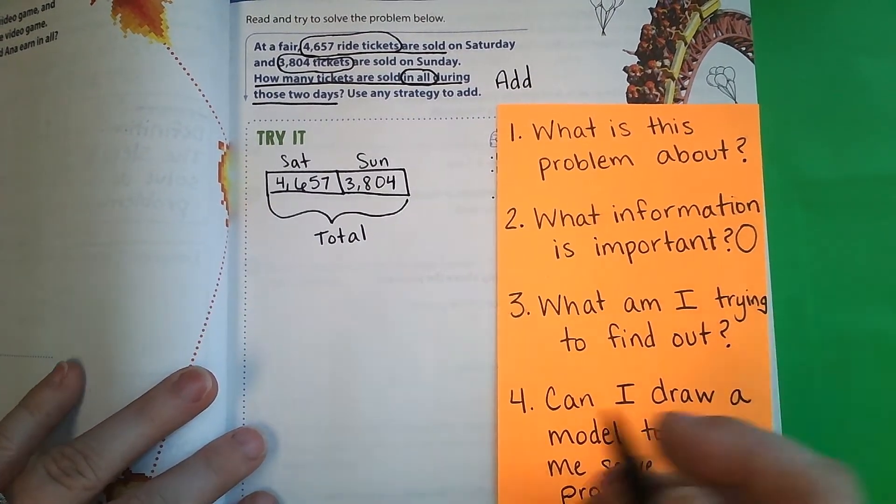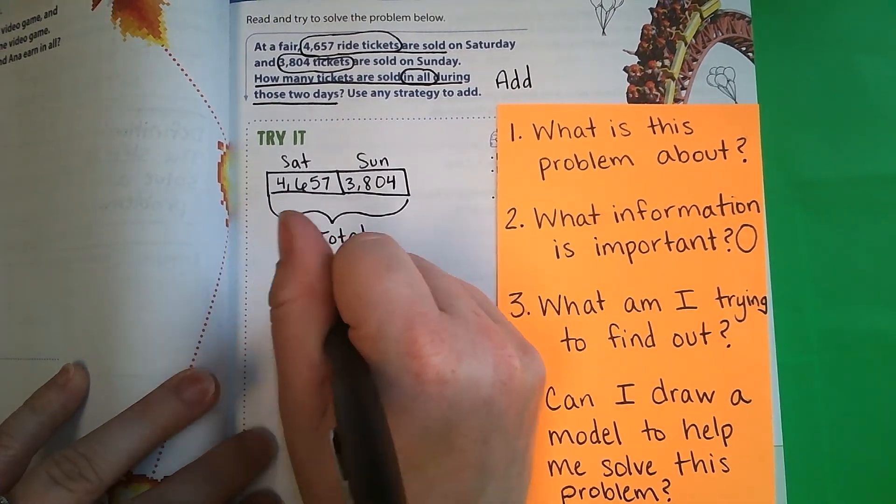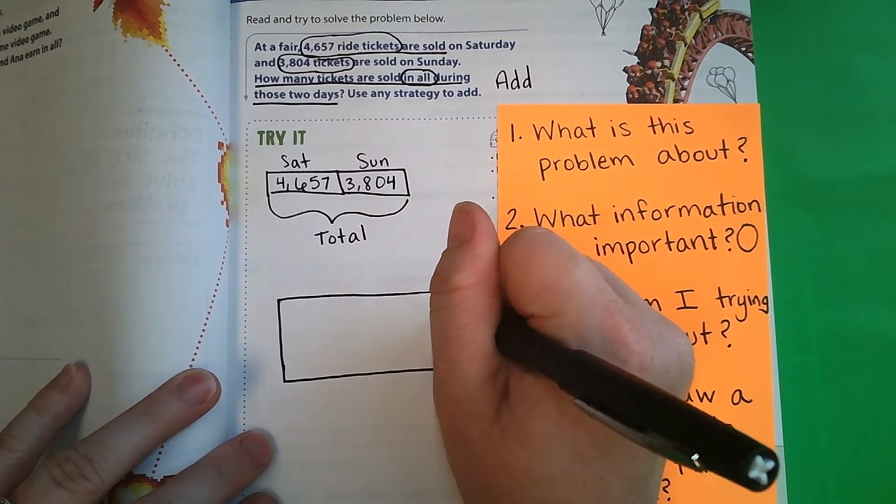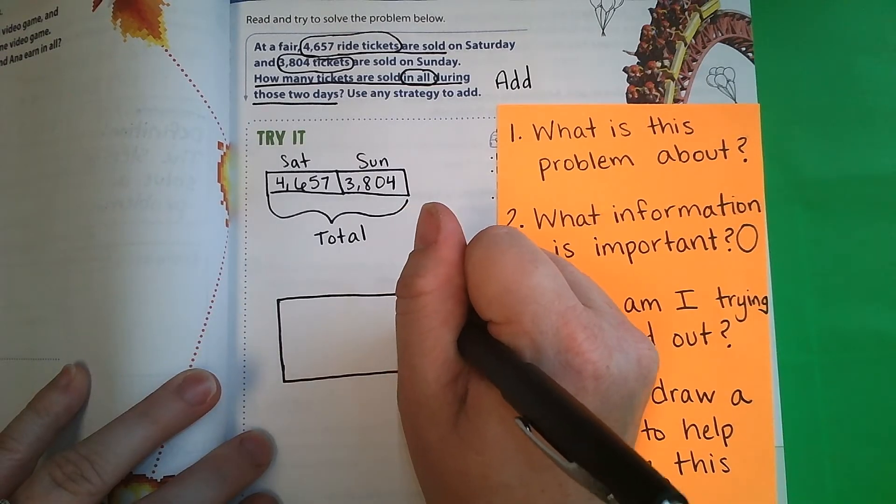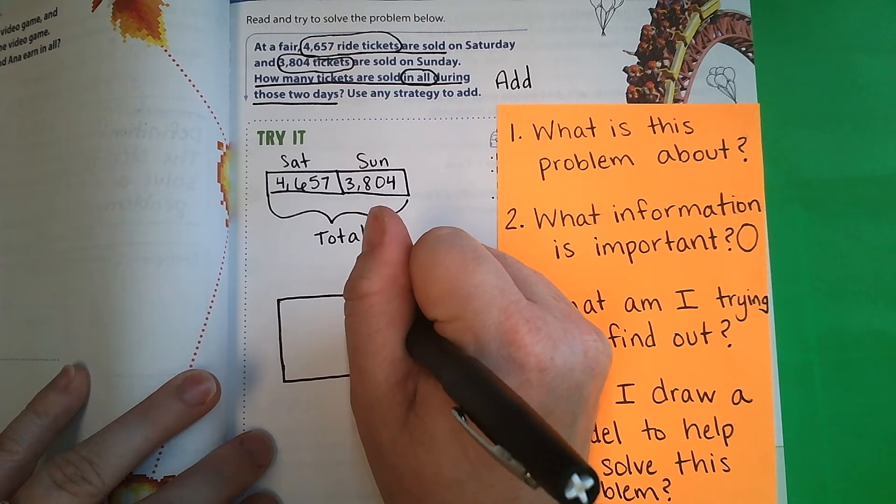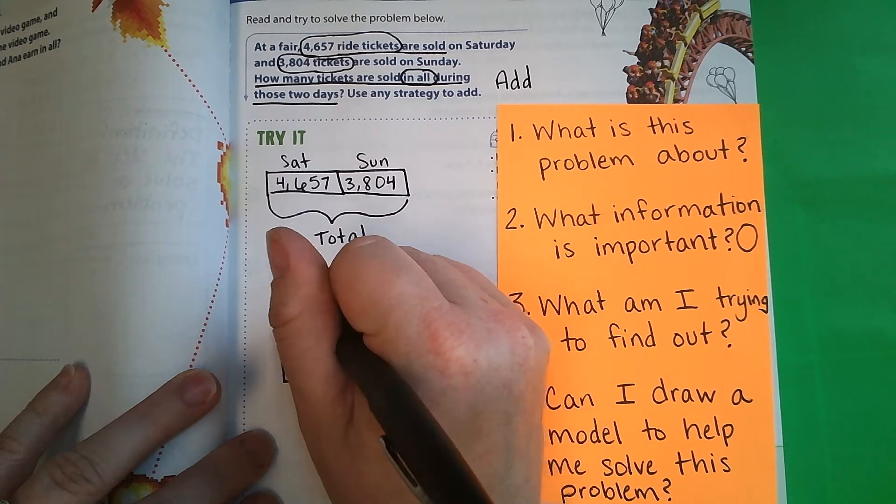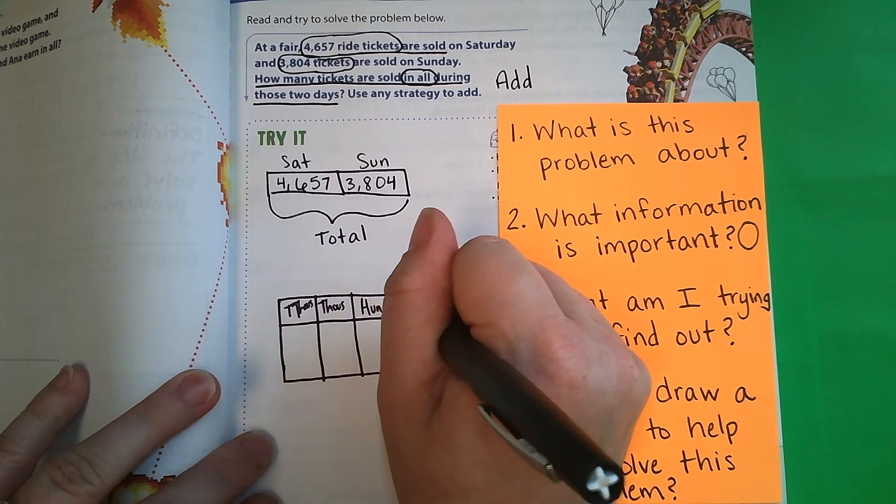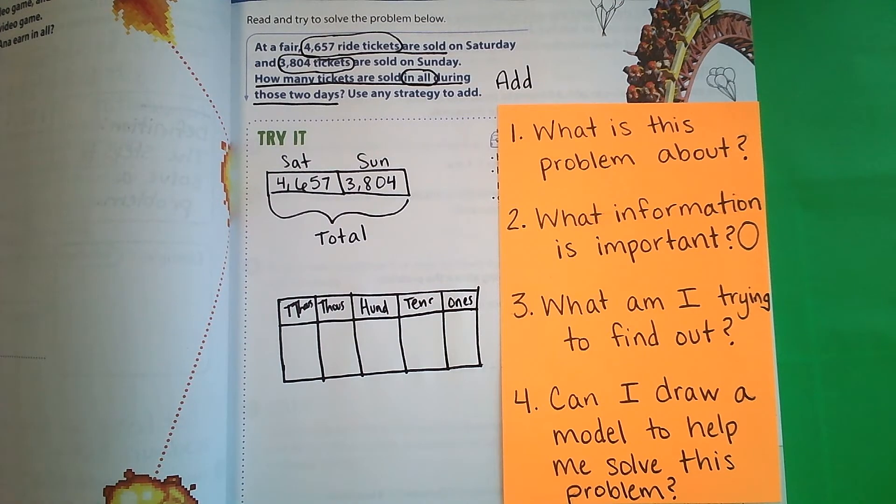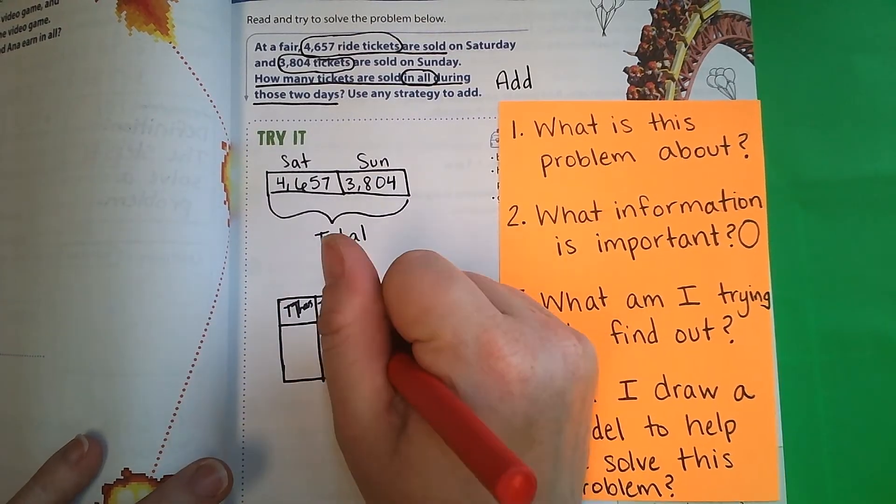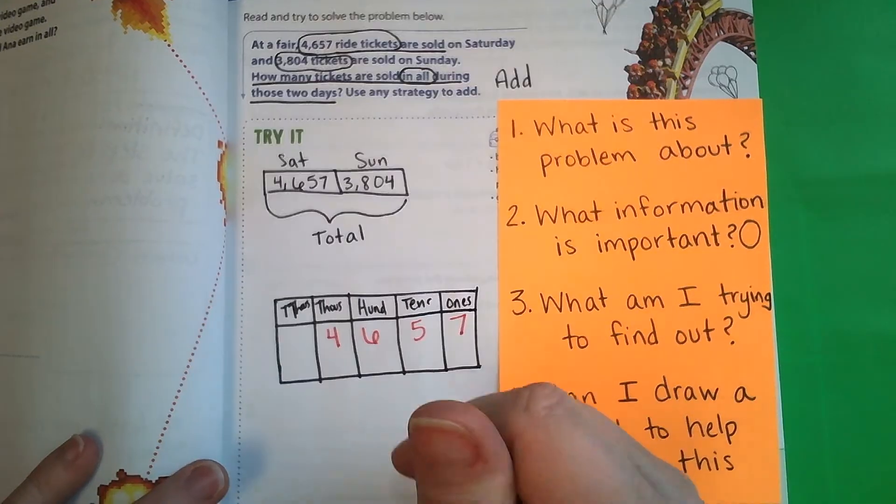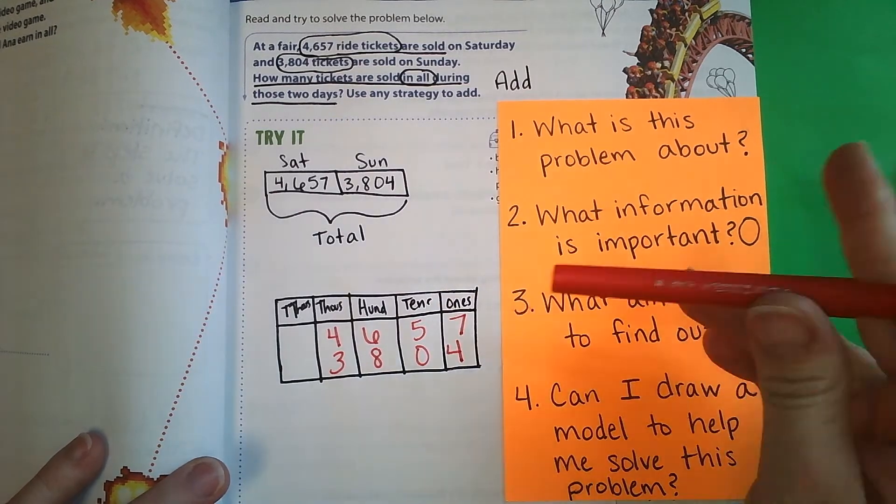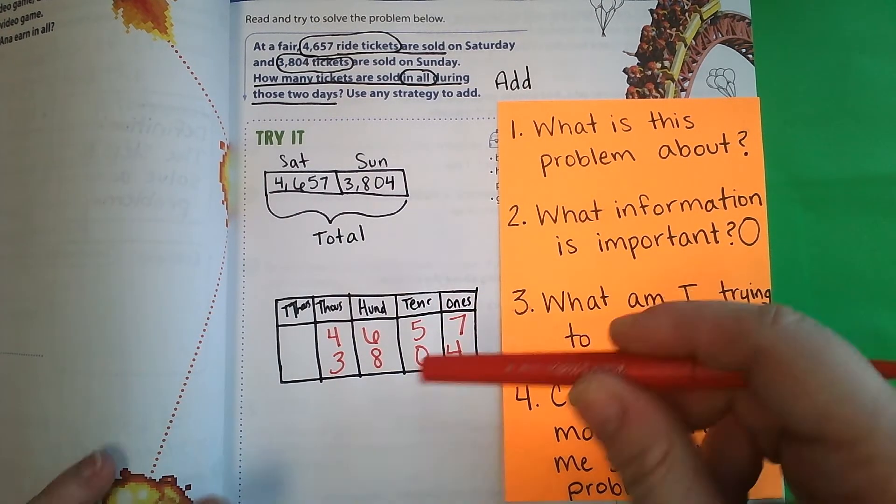Another model that we can use to solve this is a place value chart. So I'm going to use my place value chart. Ones, tens, hundreds, thousands, tens thousands. Okay, and then I'm going to place my first number in there, which is 4,657, and my second number is 3,804. Do I have a number in my ones column for each of those? Yes, I do. So now I can add them together.